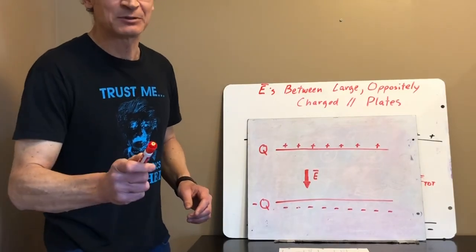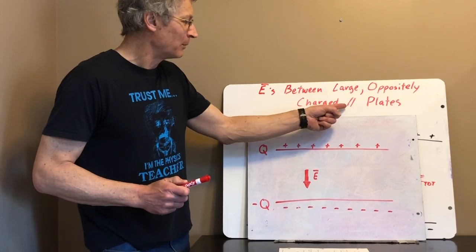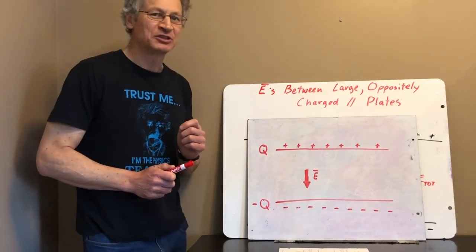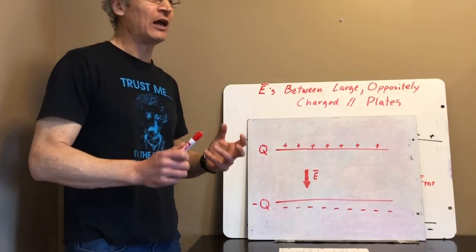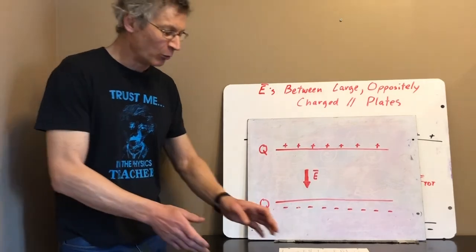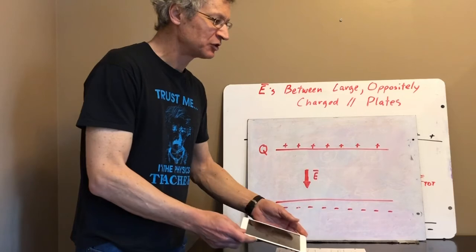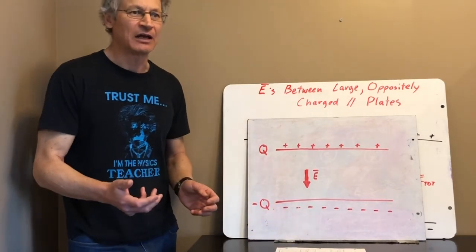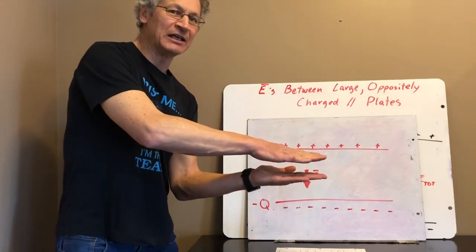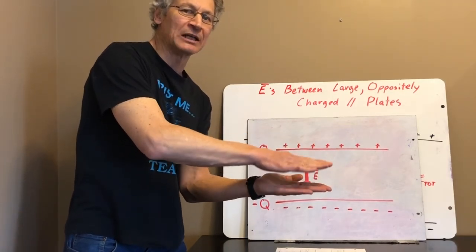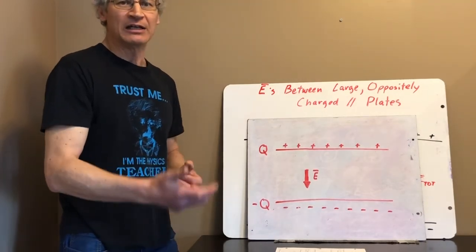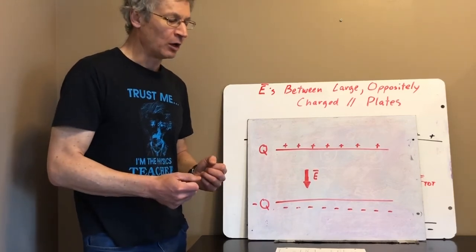Welcome to day 26. Today's episode is brought to you by the symbol for parallel lines, because today we're taking a look at the electric field between large oppositely charged parallel plates. Any screen you look at — each little pixel on a TV, phone, or whatever — is a couple of charge plates. By changing the electric field between those plates, the plasma or liquid trapped between them changes color, and that's how your picture gets produced.